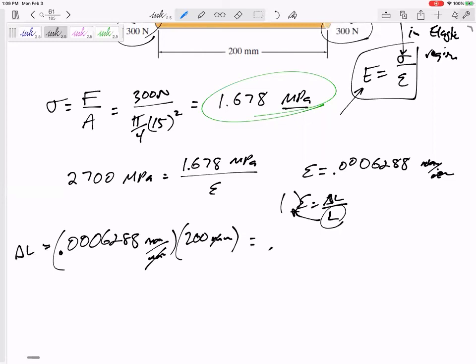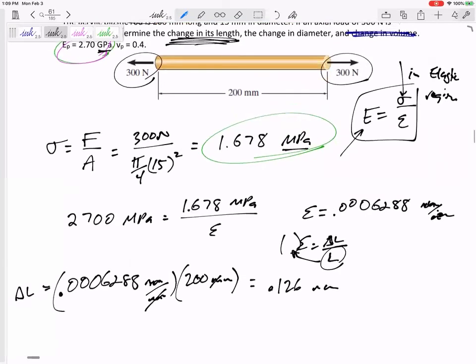So the delta L is 0.126 millimeters. And be careful, because I might not ask for its change in length—I might ask for its length. What is its length? 200.126 millimeters. But this was just asking for change in length, so 0.126 is the answer.